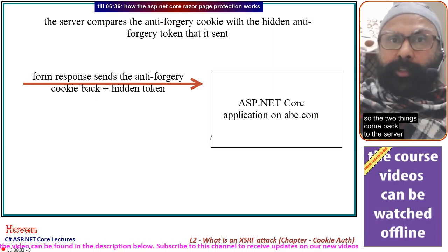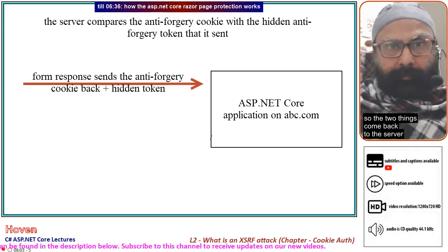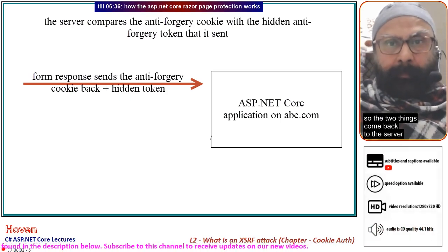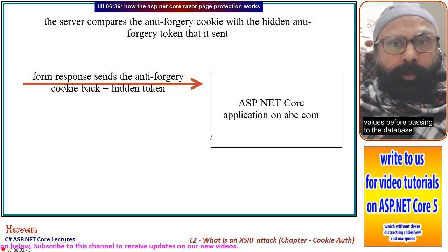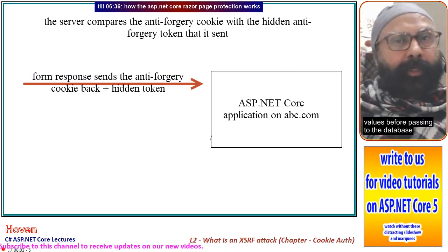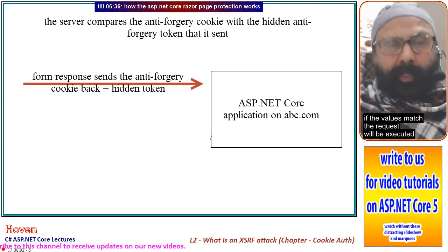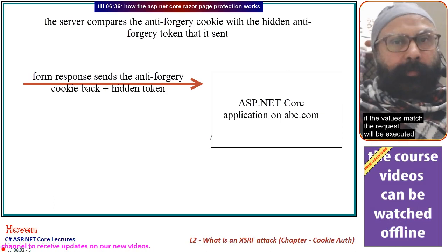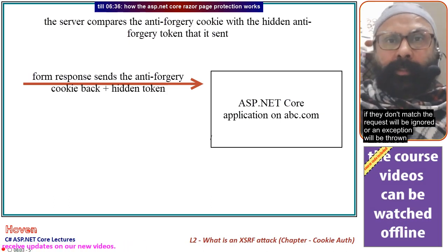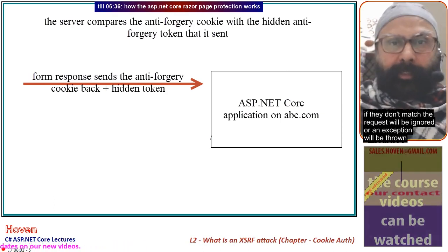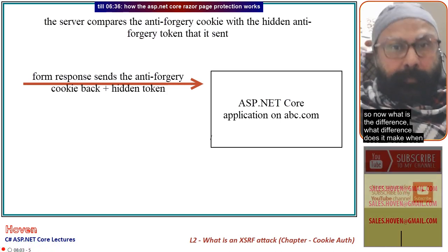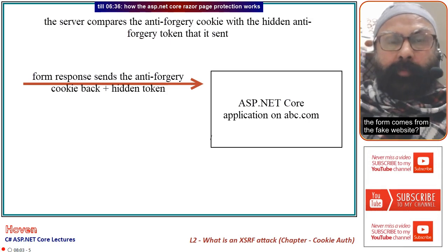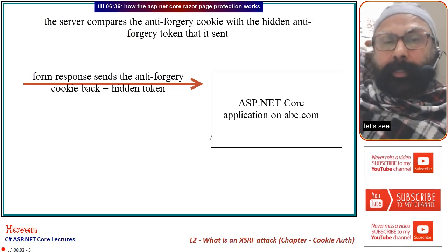The two copies come back to the server and the application validates the form request by matching both values before passing to the database. If the values match, the request is executed. If they don't match, the request is ignored or an exception is thrown. So what difference does it make when the form comes from the fake website?